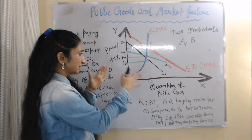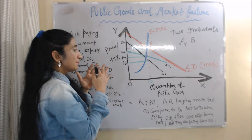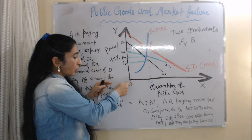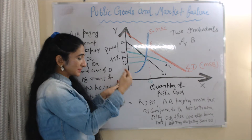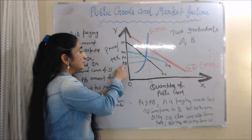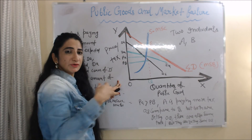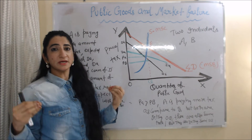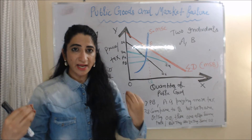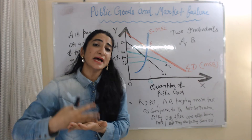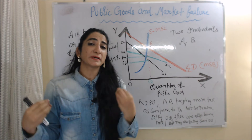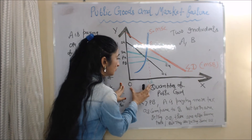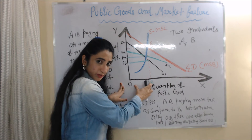Here you can clearly see person A is paying OPA amount of tax, while person B is paying OPB amount of tax. OPA is more than OPB — person A is paying more tax compared to person B — but both are getting the same amount of public goods, OQ.